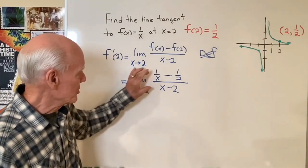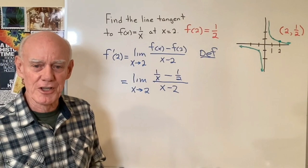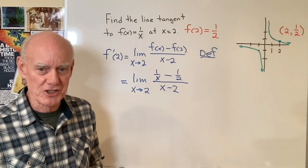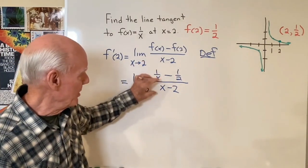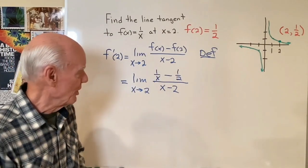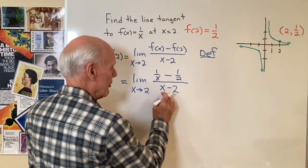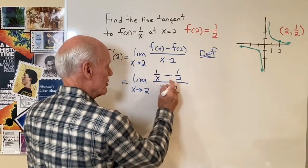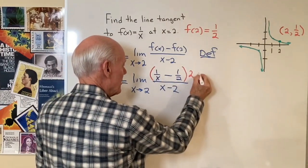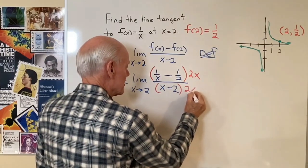To simplify a complex fraction, I can find the least common denominator for all the denominators of the little fractions, and multiply the top and bottom of the big fraction by that. So I look here and see that the least common denominator for all the fractions here is going to be 2x. So I'll multiply this by 2x, and I'll multiply this by 2x.